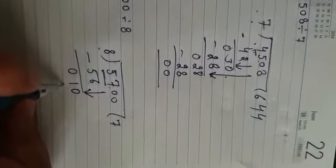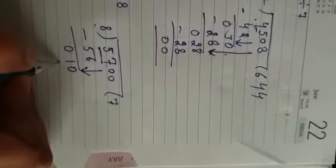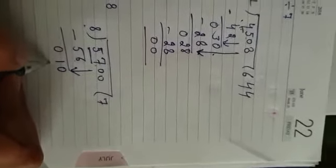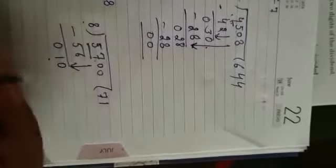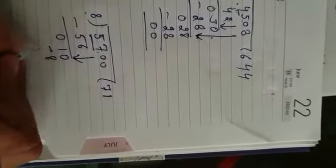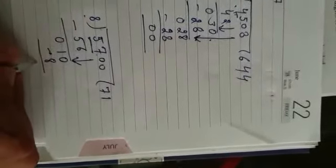Now check whether 10 comes in the table of 8 or not. 8 ones are 8. 8 twos are 16. Listen students you are not allowed to take greater number that is 16. You have to take 8. 8 ones are 8. 10 minus 8 is 2.